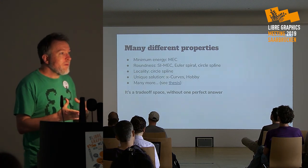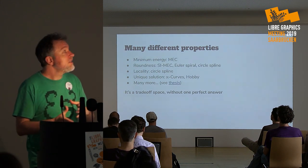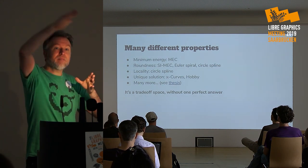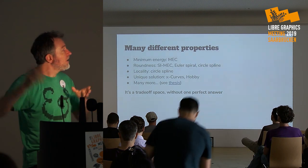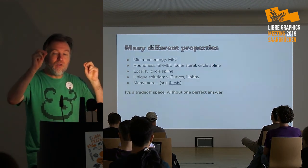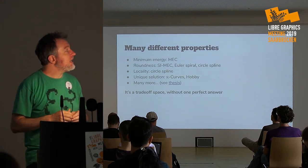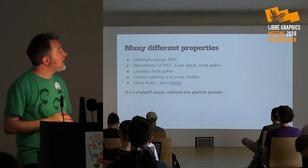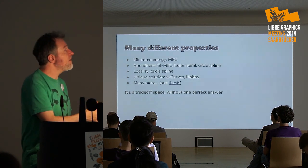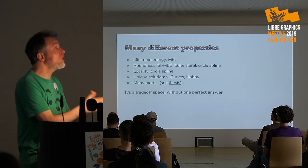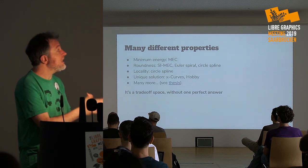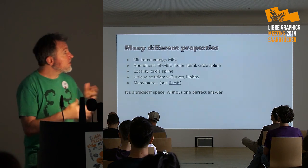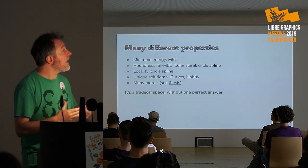Different curves give different properties. The elastica gives minimum energy; many have a roundness property where points placed on a circle yield a circular arc. Locality describes how far a perturbation ripples out — the circle spline has a very good locality property. Some splines, but not all, have a unique-solution property giving more robustness. The Kappa curves, the Hobby spline, and the circle spline have this property, but the Euler spiral does not.